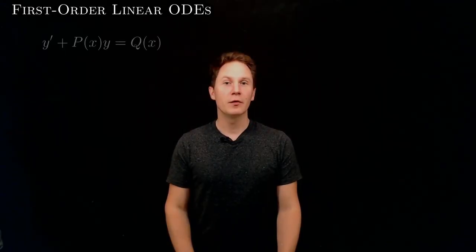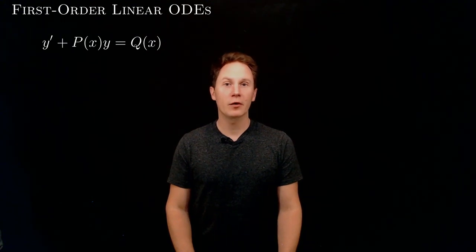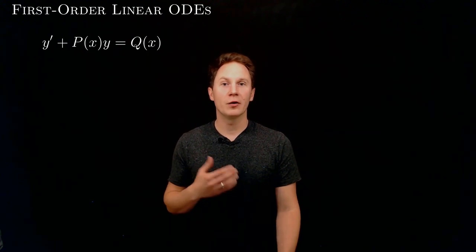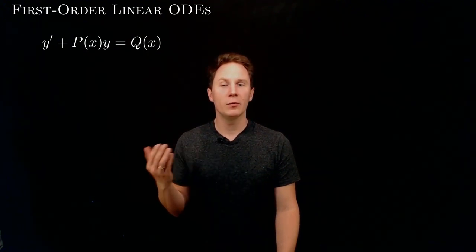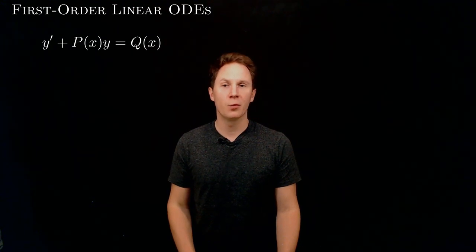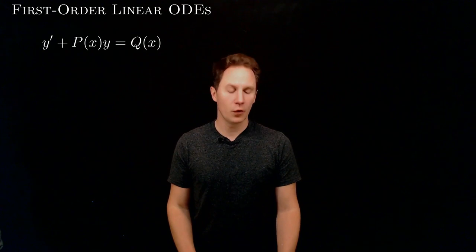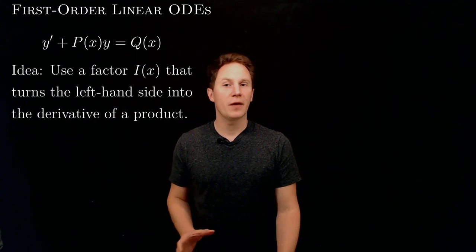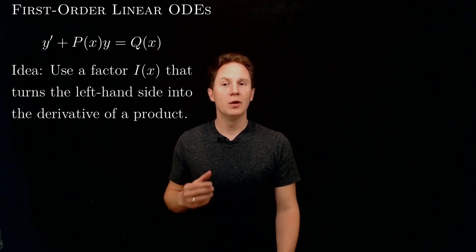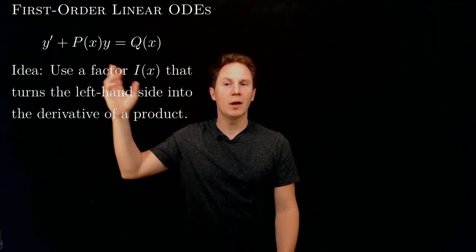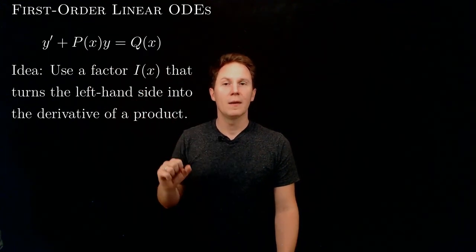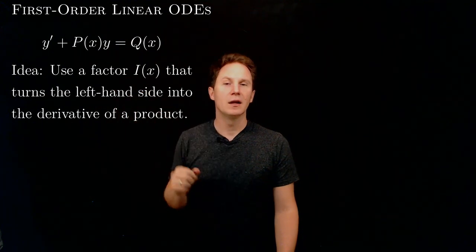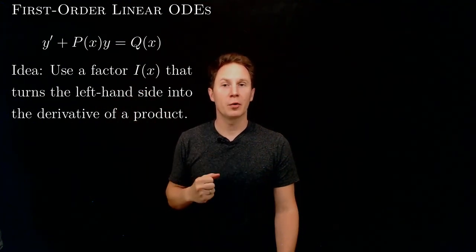First-order linear ODEs have the form y prime plus p of x times y equals q of x, where p of x and q of x are known functions and we are looking for the unknown function y. These differential equations can be solved using what's known as an integrating factor — a factor i of x that we multiply both sides of the equation by in a way that turns the left-hand side into the derivative of a product.